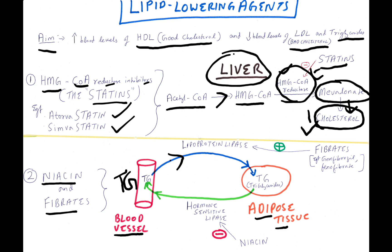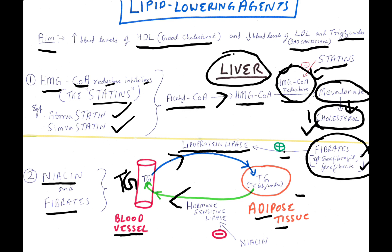Triglycerides from the adipose tissue go to blood vessels under the action of hormone-sensitive lipase. What fibrates do — examples: gemfibrozil, fenofibrate — is they stimulate lipoprotein lipase.